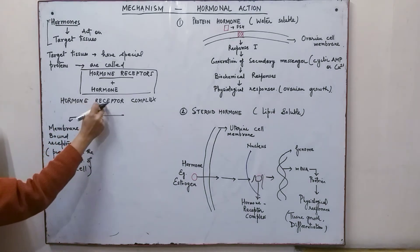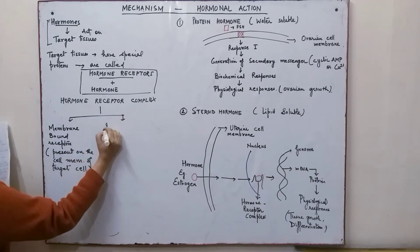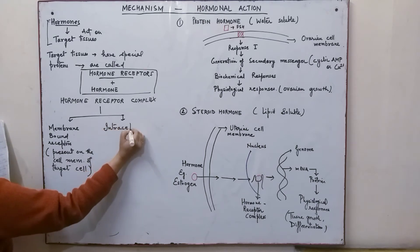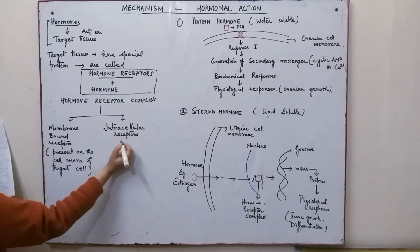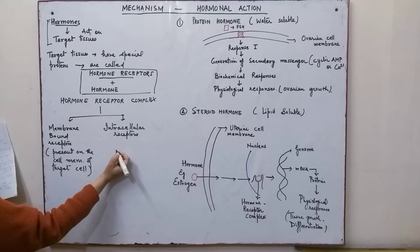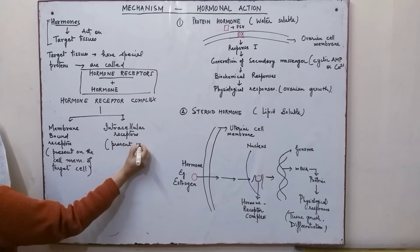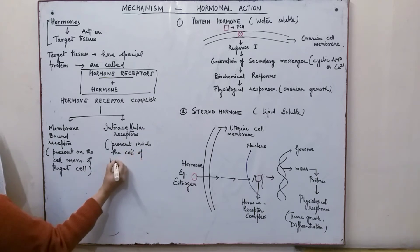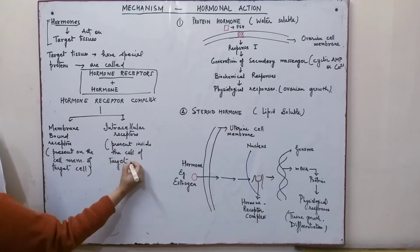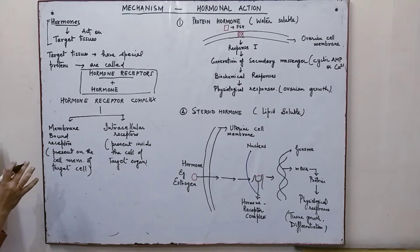Another class of hormone-receptor complex involves intracellular receptors. These receptors are found inside the cell of the target organ or target cells, and therefore they are known as intracellular receptors.